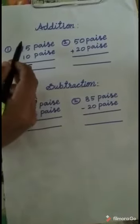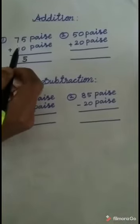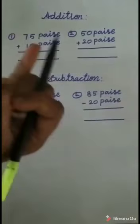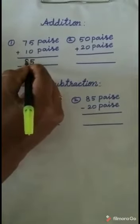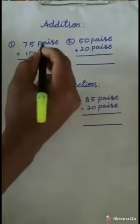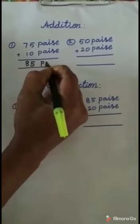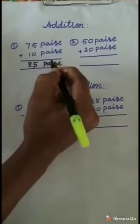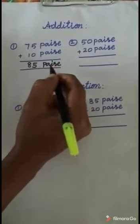Next, see the tens place. 7 and 1. Leave one finger, 7 after 8. 7 plus 1 equals 8. So we get 85. Here write paisa, P-A-I-S-E, paisa. We have 85 paisa.